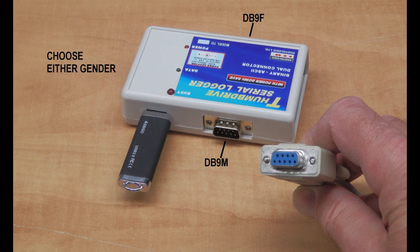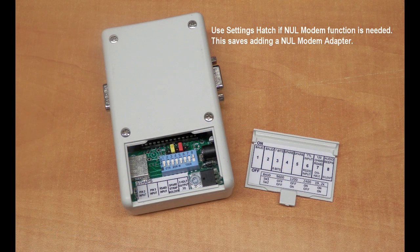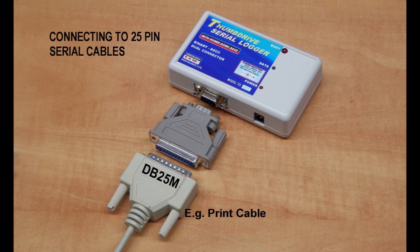When connecting cables, choose either connector on the logger — this will save you from hunting for a gender changer. Use the settings hatch if a null modem function is needed, saving you from adding a null modem adapter. Easily attach DB25 cables using either the male or female DB9 connector on the logger, and use the built-in null modem function if required.